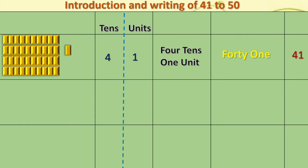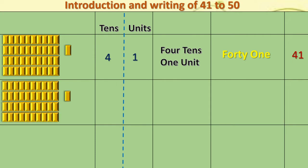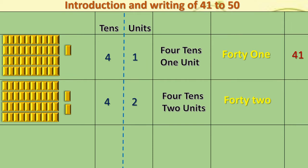Slowly and slowly we will add 1 unit to the existing object. This is 41. One more we will add. Then it becomes 4 tens and 2 units. Same thing we will write in words. And the number is 42 — that is 40 and 2.